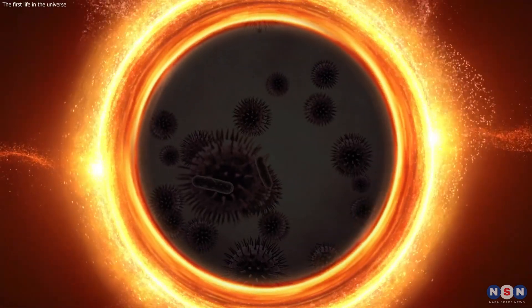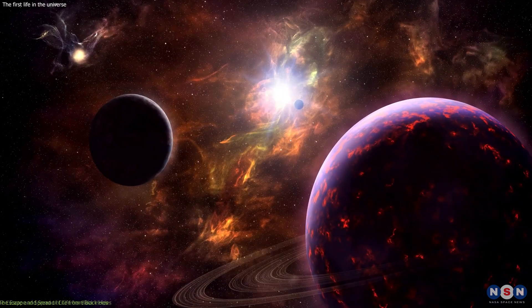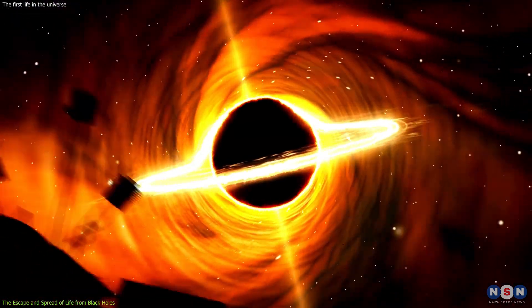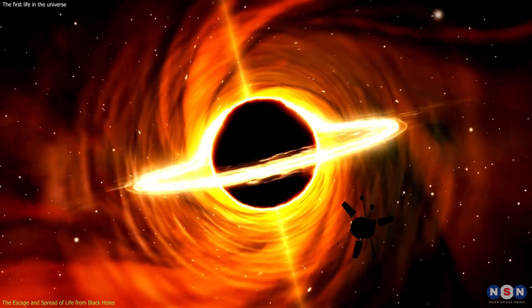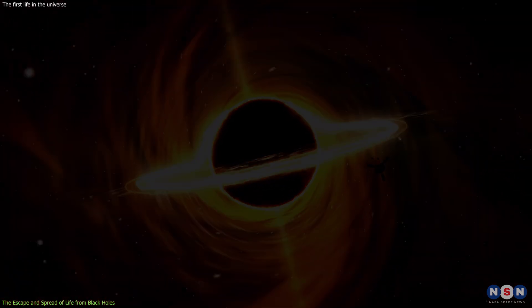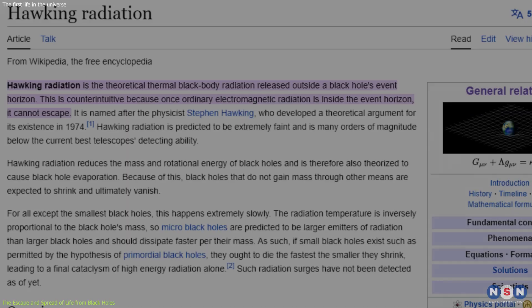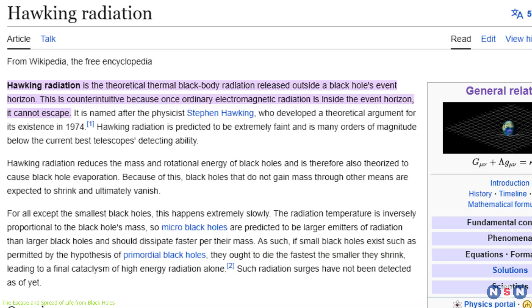But how could these life forms get out of the black hole and reach other planets and stars? After all, black holes are supposed to trap everything inside them, right? Well, not exactly. There is a way that black holes can lose mass and energy over time, and that is through a process called Hawking radiation.